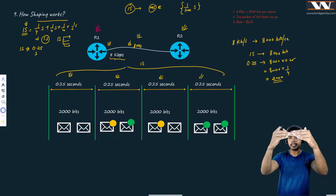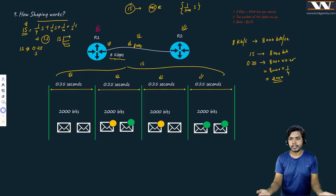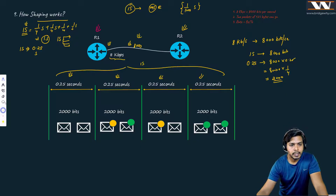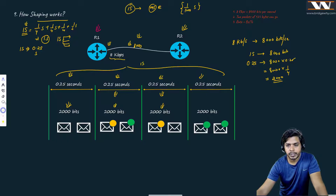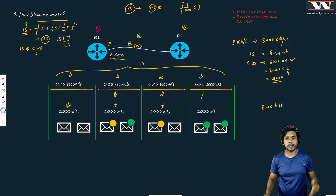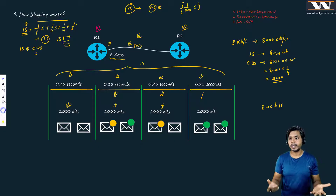8000 multiplied by 0.25 (which is 1/4) gives 2000 bits. If in one second I was sending 8000 bits, in a quarter of a second I will be sending only 2000 bits. So in each 0.25-second interval I send 2000 bits, and 2000 + 2000 + 2000 + 2000 = 8000 bits per second.